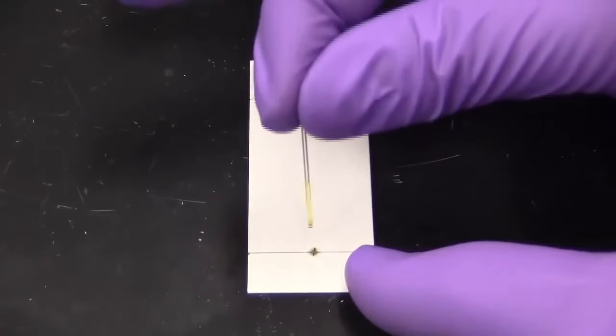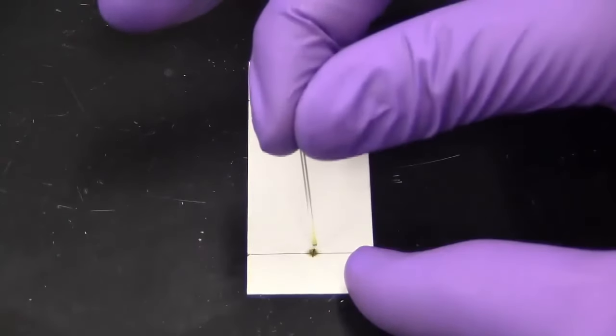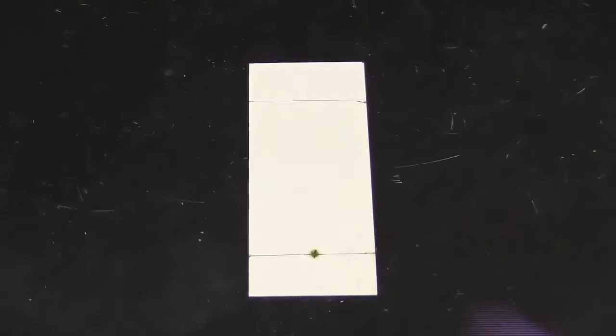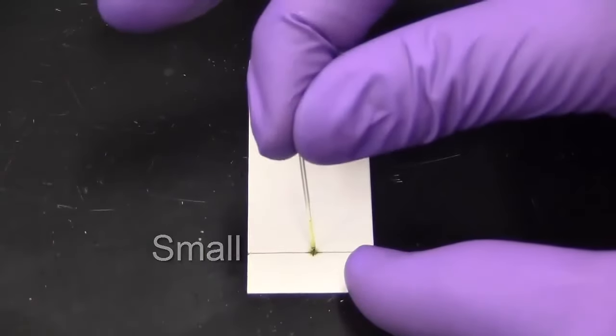Press the tip of the tube briefly to the TLC plate on the tick mark at the start line. Repeat this process until you have a concentrated point of sample. Keep the sample spot as small as possible in order to maximize your resolution.